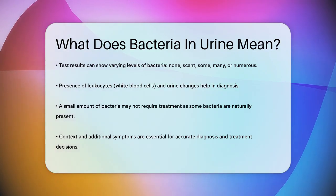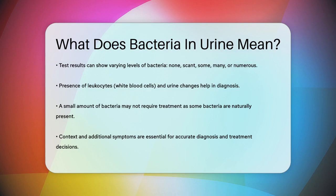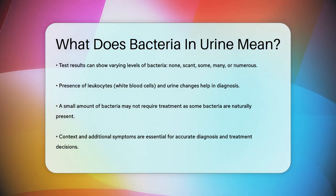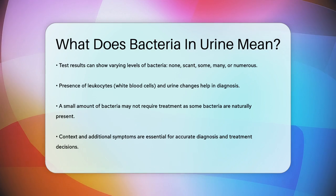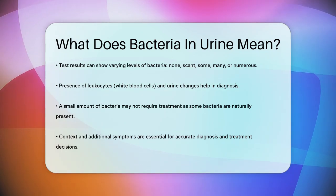So to summarize, bacteria in urine can indicate a UTI, but it can also be due to contamination. Understanding the context and other symptoms is key to making an accurate diagnosis and deciding on the right treatment.